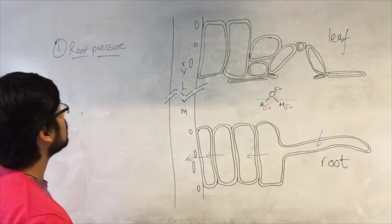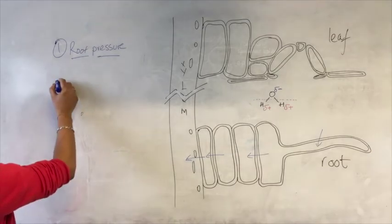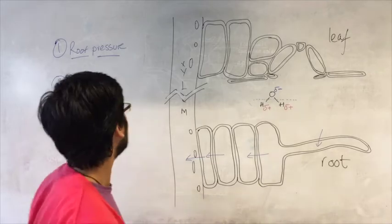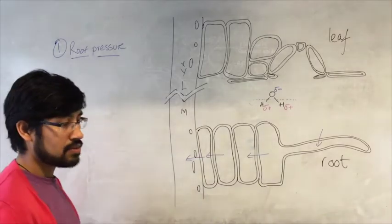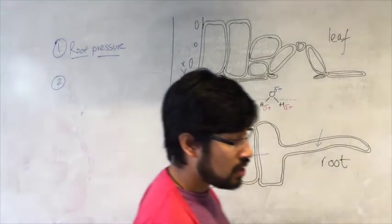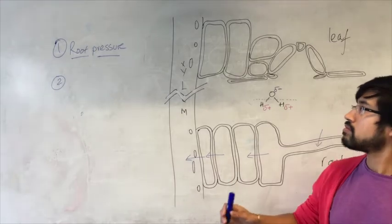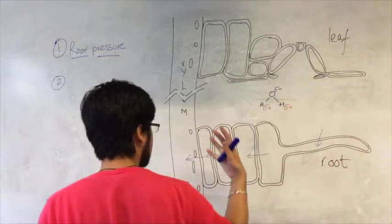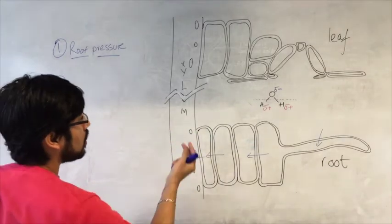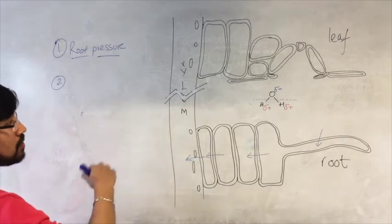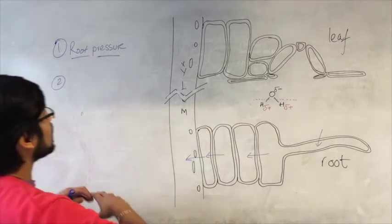The next mechanism is called the cohesion tension theory. We've discussed the pressure of water in the roots causing some movement of water up the xylem, but that doesn't account for everything.